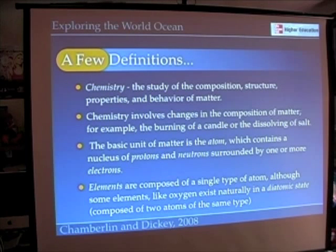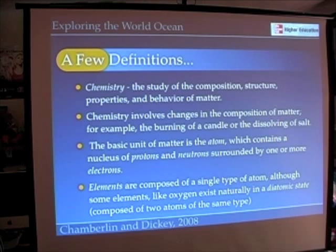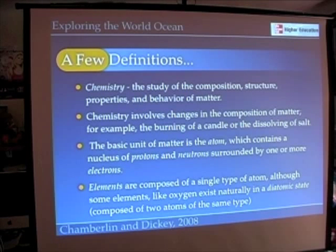As we've already talked about, the basic unit of matter is the atom. Atoms are made up of protons and neutrons in their nucleus surrounded by one or more electrons. On Earth there are about 90 different kinds of atoms, and those kinds of atoms we call elements. Elements are composed of a single type of atom. Atoms are really the building blocks — the Lego pieces — that make up everything we see and feel, everything that's matter on our planet.